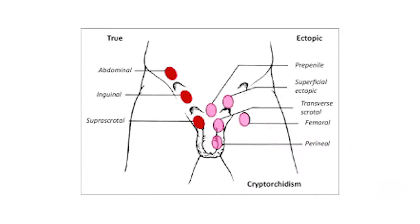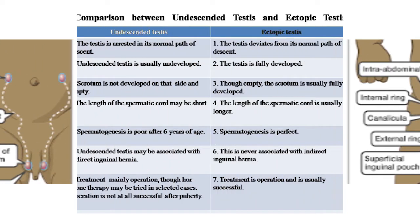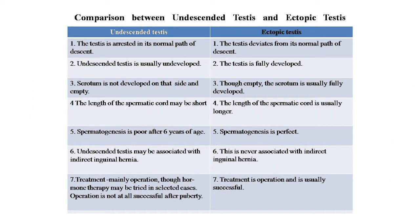Here is an image showing the normal course of testicular descent — abdominal, inguinal, and supra-scrotal — and the ectopic sites: prepenial, superficial ectopia, ectopic, transscrotal, femoral, and perineal. Another image shows the original position of the testis, the path of descent, and normal position in the scrotum: intra-abdominal at the internal ring, then canalicular, then external ring, superficial ring, and into the scrotum.